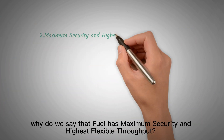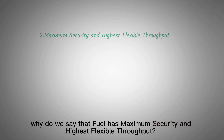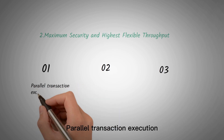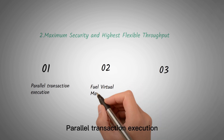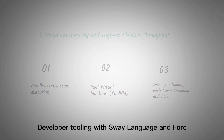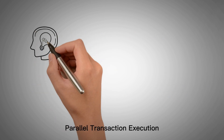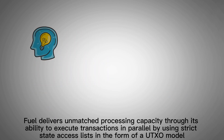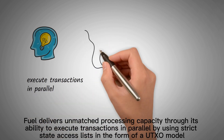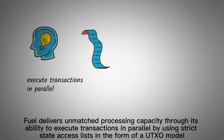Second, why do we say that Fuel has maximum security and highest flexible throughput? There are three central pillars to Fuel's technology stack: parallel transaction execution, Fuel virtual machine, and developer tooling with Sway language and Forc. Fuel delivers unmatched processing capacity through its ability to execute transactions in parallel by using strict state access lists in the form of a UTXO model.